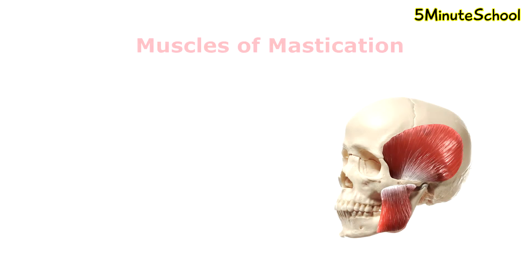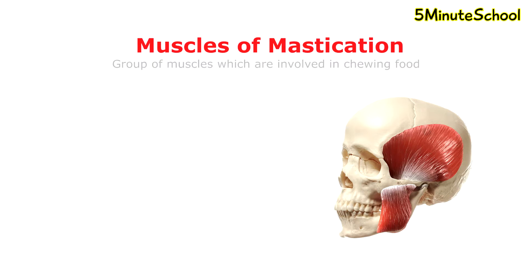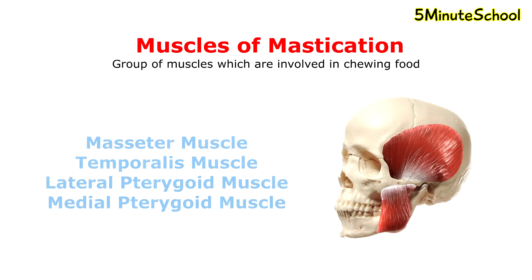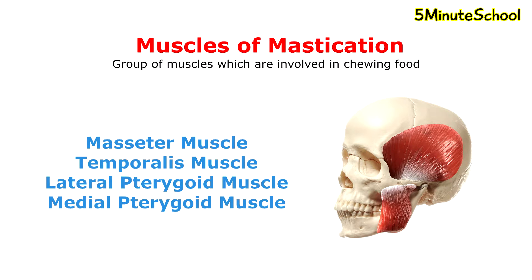In today's video we're going to be talking about the muscles of mastication. There are four primary muscles of mastication: the masseter muscle, the temporalis muscle, the lateral pterygoid muscle, and the medial pterygoid muscle. There are also accessory muscles of mastication, which we'll talk about at the end of this video.